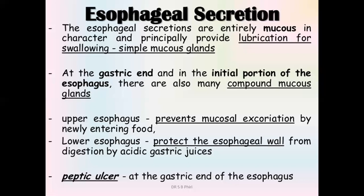The lower esophageal mucus protects the esophageal wall from digestion by acidic gastric secretions. If protection is insufficient, peptic ulcers develop there. The mucus at both ends of the esophagus thus serves dual roles: lubrication and acid neutralization via bicarbonates.